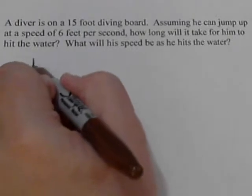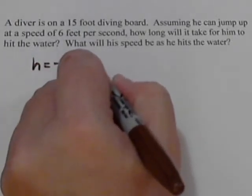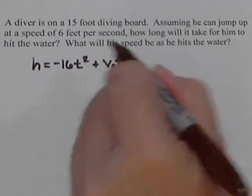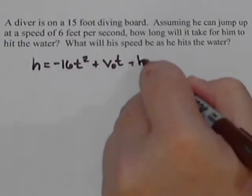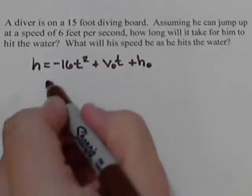So we're going to start out with the falling object formula, because our diver will be a falling object. So here's our general form for a falling object. And let's see what we know.